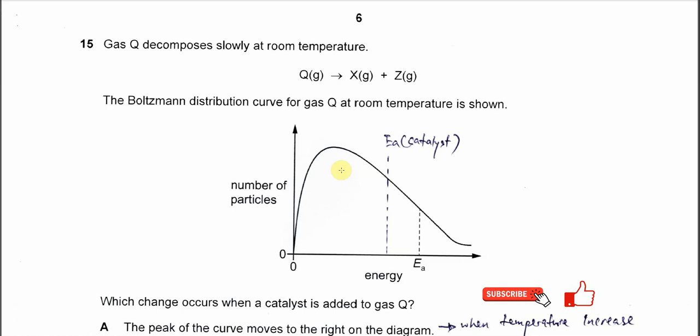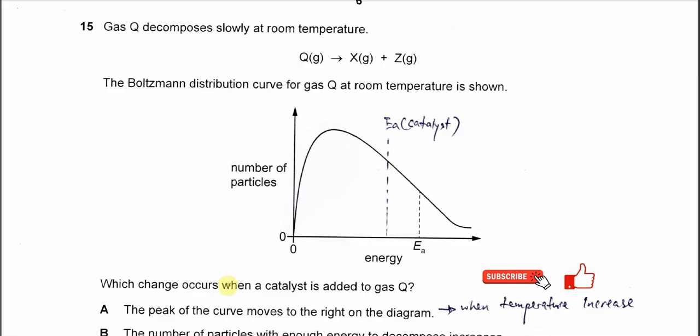Question 15. Gas Q decomposes slowly at room temperature to form X and Z. The Boltzmann distribution curve for gas Q at room temperature is shown here. Which change occurs when a catalyst is added to gas Q?